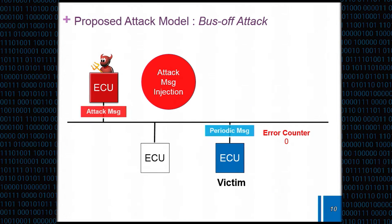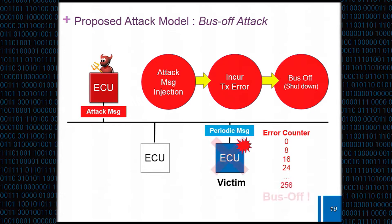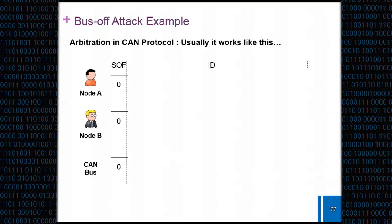What the attacker does, it injects the message at the right timing with a very well-crafted message. If it matches that timing, the actual transmit error count of the victim increases. So that means if you have just one compromised ECU, you can shut down any ECU on your bus by just performing this attack. If it iterates that, that victim ECU's error count would eventually go over the limit of 255 and enter the bus-off state.